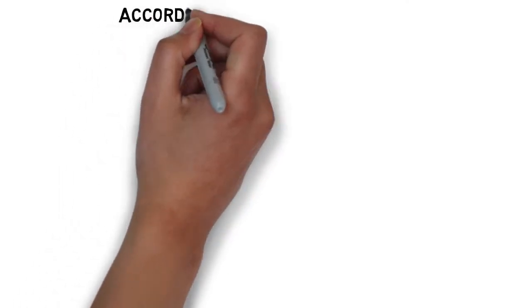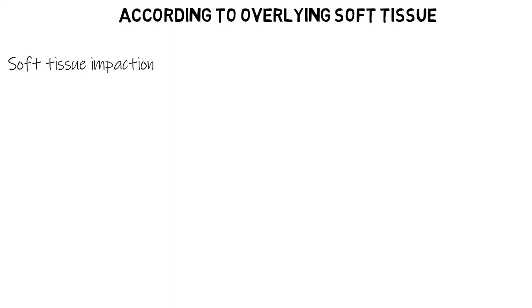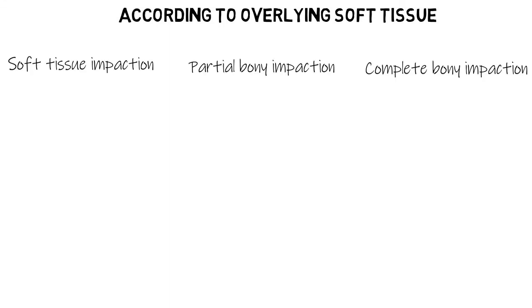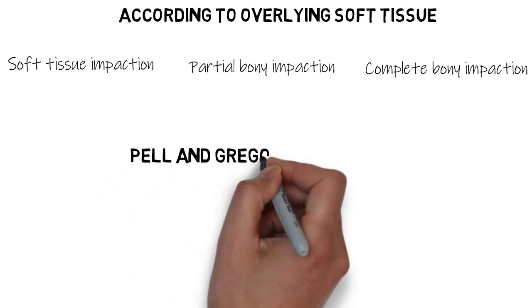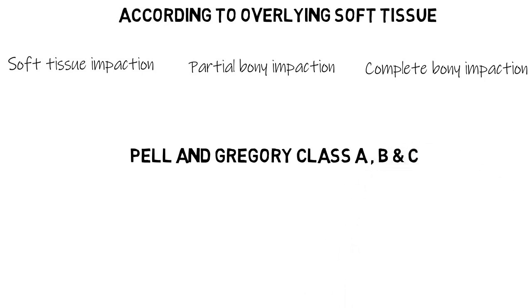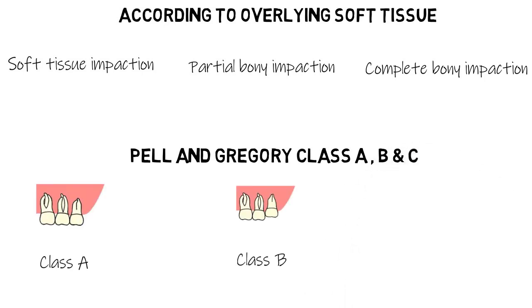The soft tissue impaction classification is essentially the same for maxillary third molars — soft tissue impaction, partial bony impaction, and complete bony impaction. There is no Class 1, 2, or 3 for maxillary third molar impaction simply because there is no ramus in the maxilla. However, the Pell and Gregory Class A, B, and C classification holds its value for maxillary third molar impactions, with the classification being essentially the same as for mandibular third molars — based on the depth of the impacted tooth.